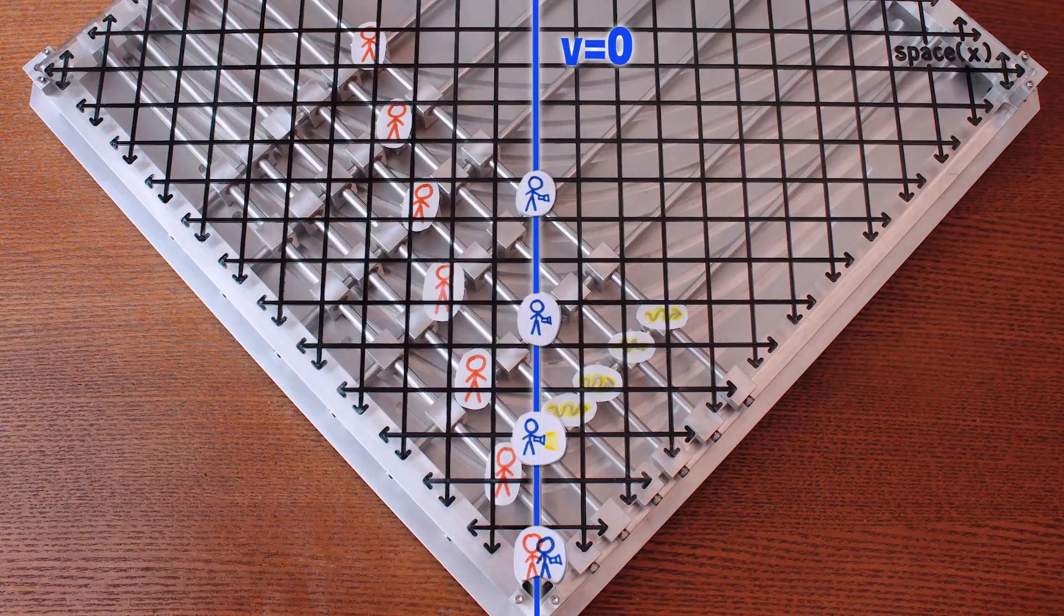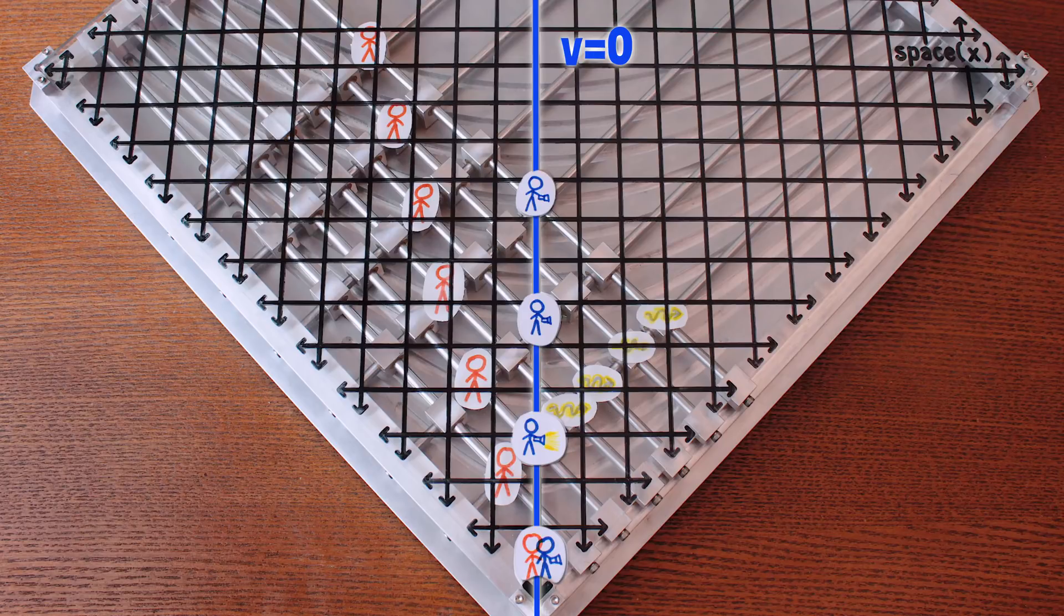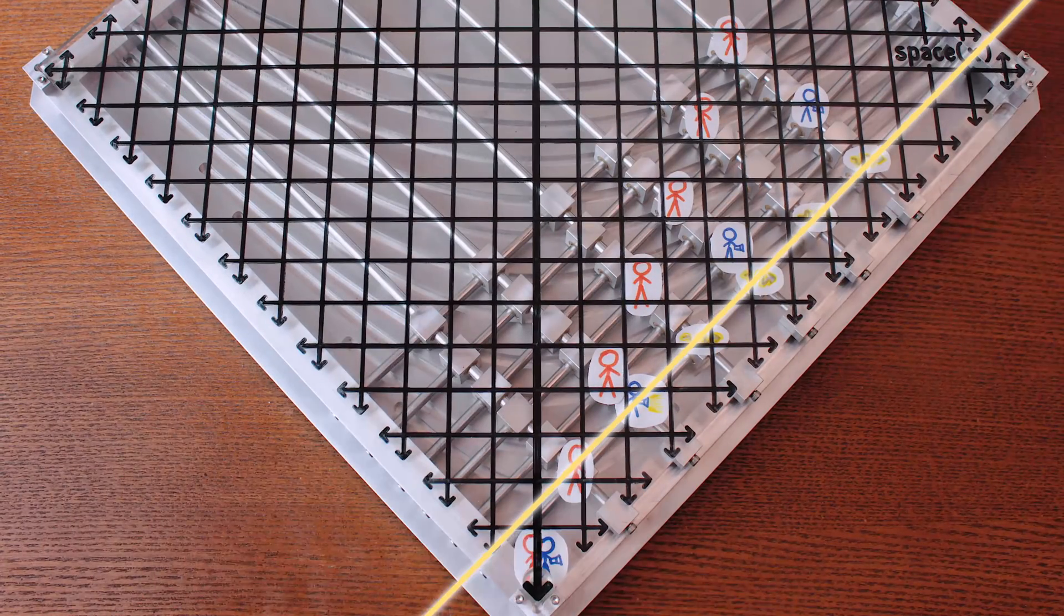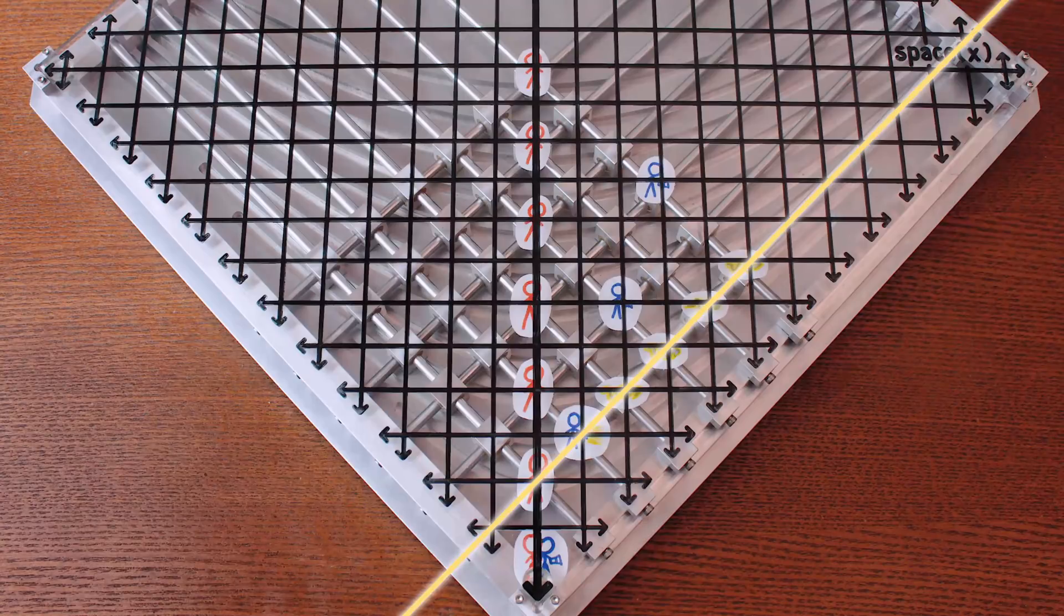And viewed from your perspective, you're not moving, aka you're at the same position at all times, but the light ray still travels at the speed of light. In fact, viewed from any moving perspective, the light ray always moves along a 45-degree line on a spacetime diagram, at least one with axes scaled like this.